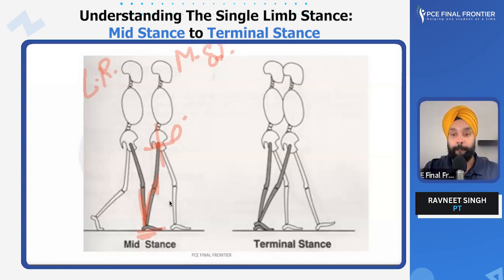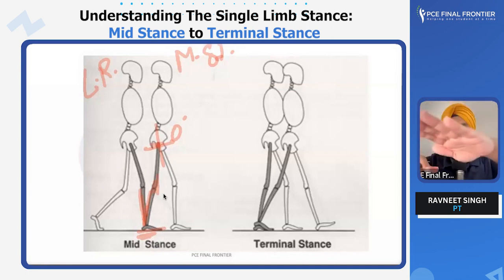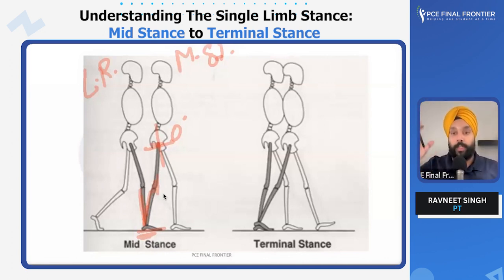Try to take one step backwards, one step forward, one step backwards, one step forward. You'll see the momentum in the hip joint and you'll see the momentum at the ankle joint as well.